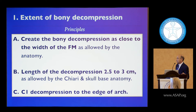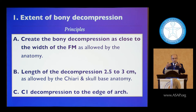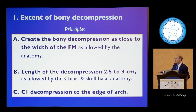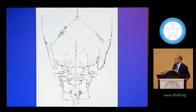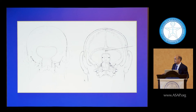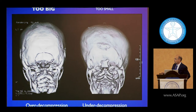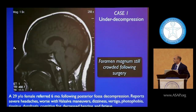My philosophy is to create a bony decompression as close to the width of the foramen magnum as allowed by anatomy. Some surgeons do less and compensate by doing more internally — that's a philosophical difference. Make the decompression as large anatomically as possible. Length varies from two-and-a-half to three centimeters depending on anatomy. If taking C1, take it to the edge of C1. In the literature, textbooks show decompression approaches that range — to me — from over-decompression to under-decompression.